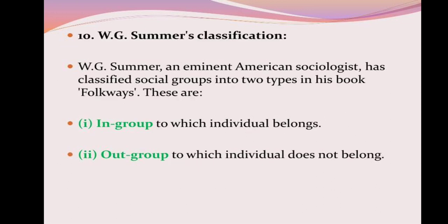W.G. Sumner's classification divides groups into two types: in-group and out-group. An in-group is one to which an individual belongs; an out-group is one to which an individual does not belong.